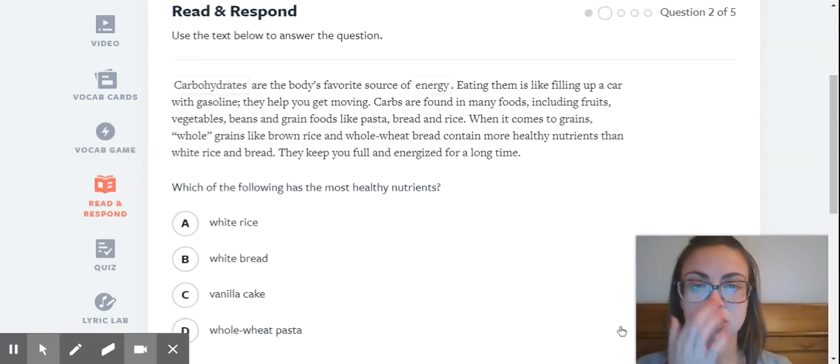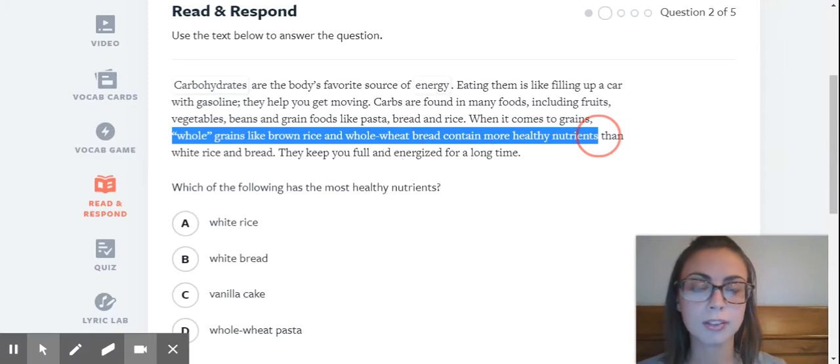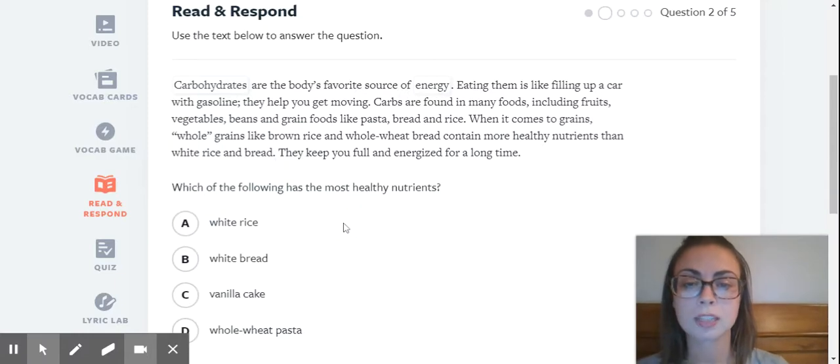The passage states good nutrition is about balancing all different kinds of foods. Different foods have different nutrients. So here we're matching that specific evidence that the author is using to talk about good nutrition. Let's look at our next one. Carbohydrates are the body's favorite source of energy. Eating them is like filling up a car with gasoline. They help you get moving. Carbs are found in many foods, including fruits, vegetables, beans, and grain foods like pasta, bread, and rice. When it comes to grains, whole grains like brown rice and whole wheat bread contain more healthy nutrients. So that's a good point right there. It's giving you something that is more healthy. So you want to make that note in your mind. What is more healthy when we're talking about carbohydrates? Whole grains and whole wheat contain more healthy nutrients than white rice and bread. So if you compare it to white rice and white bread, the whole is going to be better. And it's because it keeps you full longer. They keep you full and energized for a long time.